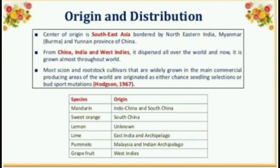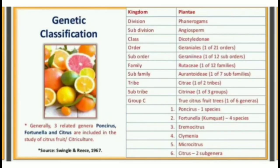Species and their origin: Mandarin from Indochina and South China; Sweet Orange from South China; Lemon, origin unknown; Lime from East India and Archipelago; Pumelo from Malaysia and Indian Archipelago; Grapefruit from West Indies.